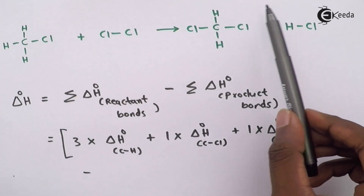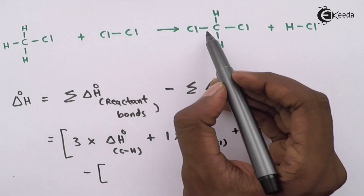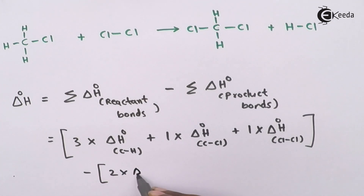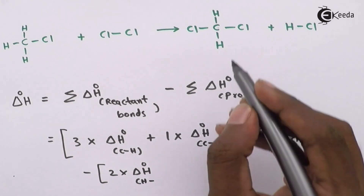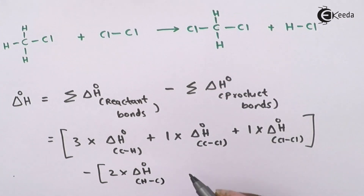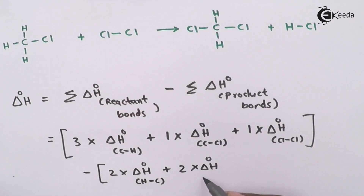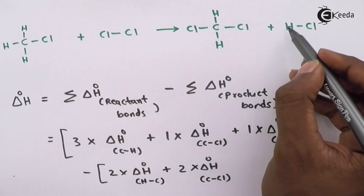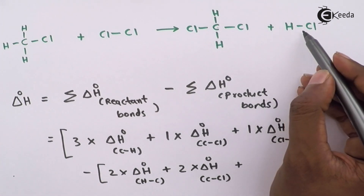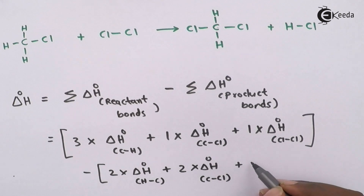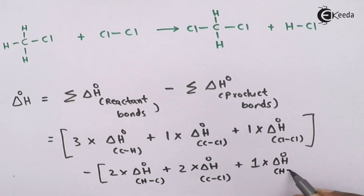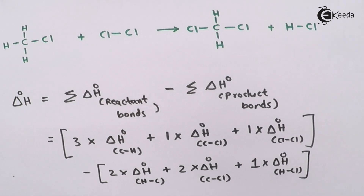For the products: CH2Cl2 contains two C–H bonds and two C–Cl bonds, so we have 2 × ΔH°(C–H) + 2 × ΔH°(C–Cl). HCl contributes 1 × ΔH°(H–Cl). This gives us all the terms needed to solve for the unknown C–Cl bond enthalpy.